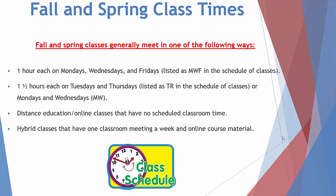Fall and spring classes generally meet in one of the following ways: one hour each on Mondays, Wednesdays, and Fridays, listed as MWF; one and a half hours each on both Tuesdays and Thursdays, listed as TR; or Mondays and Wednesdays, MW. Other options include three hours at a time for a once-a-week afternoon, evening, or Saturday class; distance education or online classes with no scheduled classroom time; and hybrid classes that have one classroom meeting a week and online course material.